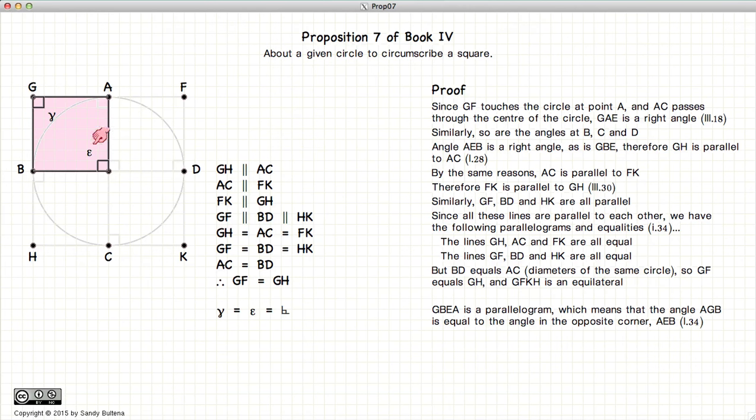Now this is a parallelogram. We've already established that all the sides are parallel. And in a parallelogram, the opposite angles are always equal. And since we have constructed these two diameters to be perpendicular to each other, or in other words, this is a right angle,